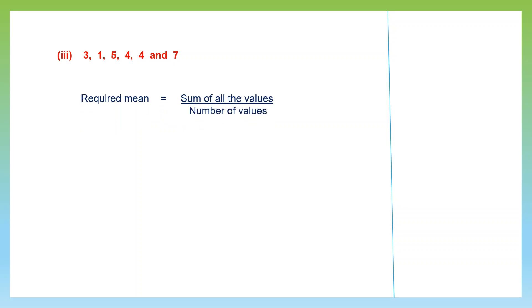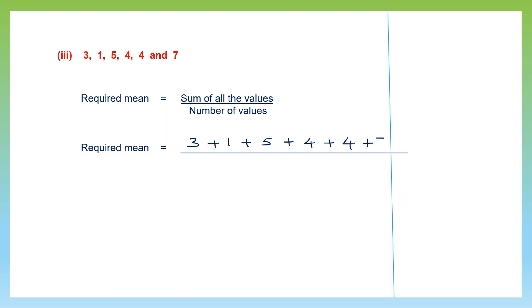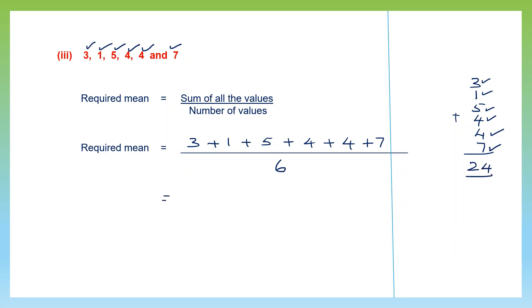Question 3. Required mean is sum of all the values divided by the number of values: 3 plus 1 plus 5 plus 4 plus 4 plus 7, divided by 6. Adding up: 3 plus 1 is 4, plus 5 is 9, plus 4 is 13, plus 4 is 17, plus 7 is 24. So here we've got 24 divided by 6. 6 fours are 24. Our answer is 4.